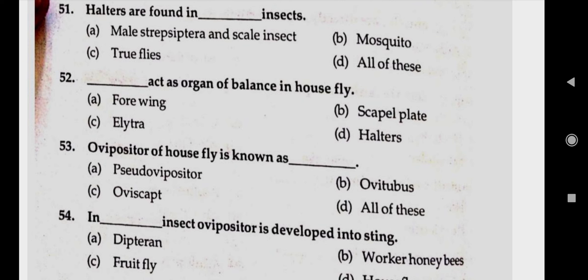Question number fifty-two: dash acts as an organ of balance in housefly. Answer D, halteres. Question number fifty-three: ovipositor of housefly is known as. Answer D, all of these — ovula, pseudo-ovipositor, ovi-tubes, ovi-scape.